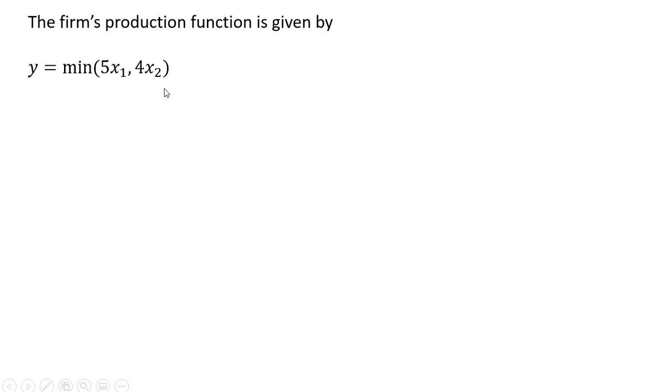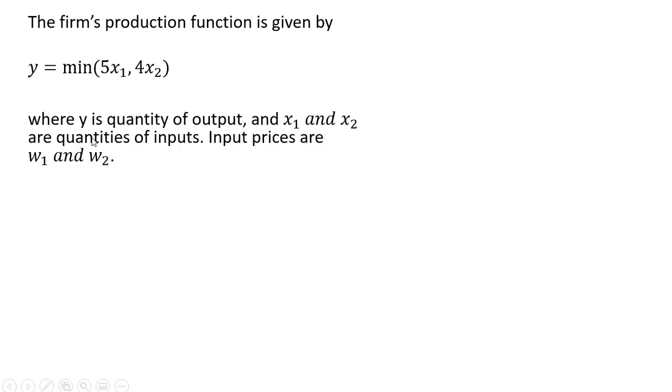Here's the firm's production function. Output Y is a minimum of the following: we got input X1 and input X2. Input prices are W1 and W2.